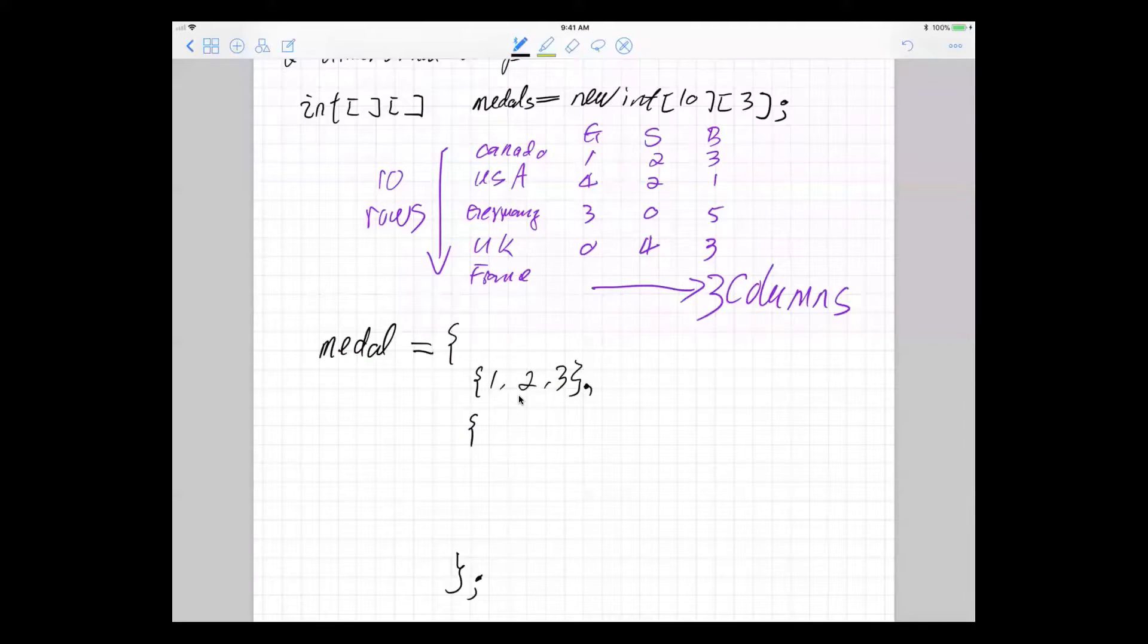Now, how do we initialize the two-dimensional arrays? We are going to use matching curly braces. But inside the matching curly braces, we are again going to use matching curly braces to specify each row. So the first row, we are going to say, is one, two, three.